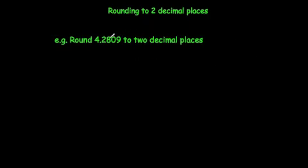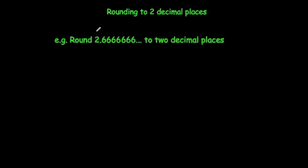Round 4.2809 to two decimal places. We look at the third decimal place — it's a 0 — so we round down: 4.28. Next, round 2.666 recurring to two decimal places — that's 2.6666 and so on. We look at the third decimal place, which is a 6, so we round up: 2.67.